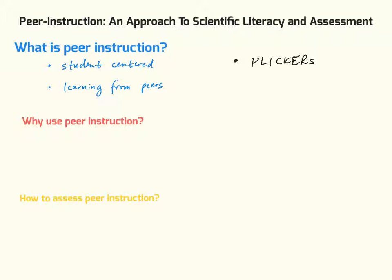What plickers are — they're just cards that have four letters on them: A, B, C, and D. And I pose multiple-choice conceptual questions to students, and they pick an individual response so they don't communicate with one another initially.